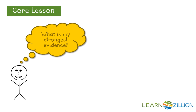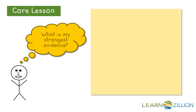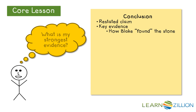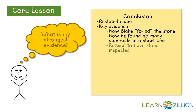Now, what was my strongest evidence? We had the way Blake found the stone. We also had the number of stones he found. We know that he refused to have the stone inspected. And we also have the certificate — we know that certificate is really important because it's material evidence.